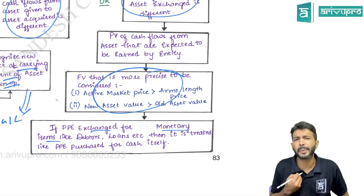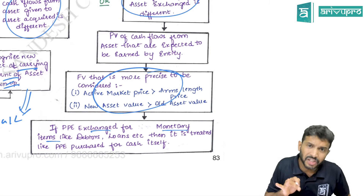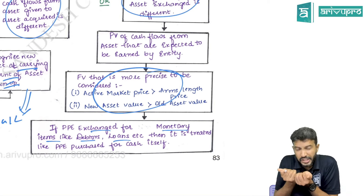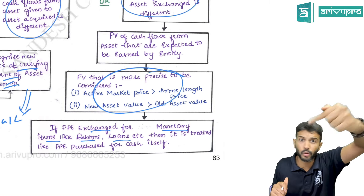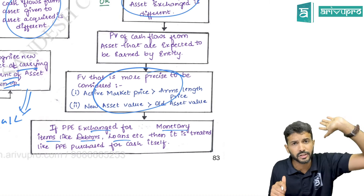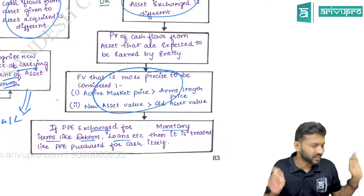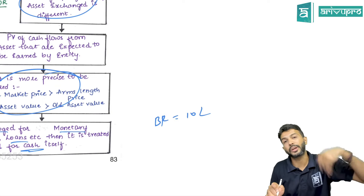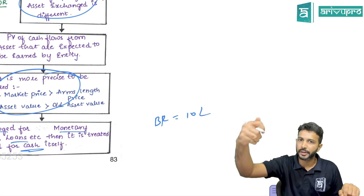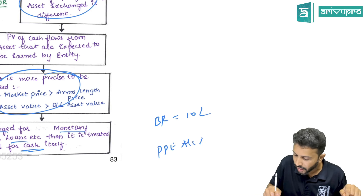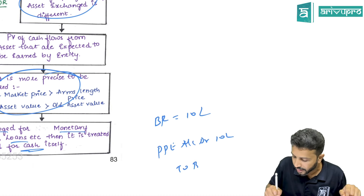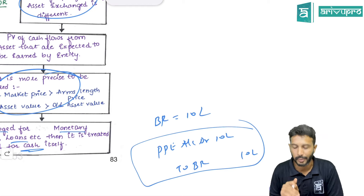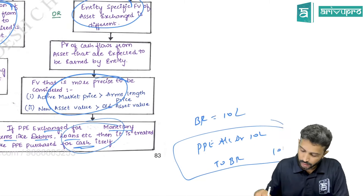If PPE is exchanged for monetary items — such as debtors or bills receivable — it is treated like a cash purchase. For example, if you give a bill receivable of 10 lakh rupees to purchase PPE, the journal entry is PPE account debit 10 lakh to bills receivable account 10 lakh. The bill receivable value itself becomes the PPE value.